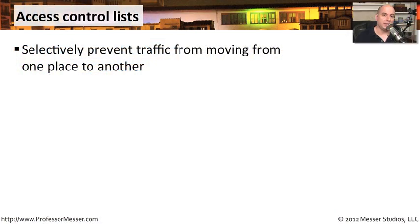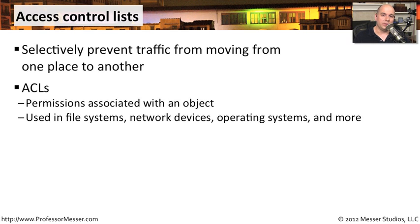An access control list is a mechanism that we might have in a file server, router, firewall, or any other type of infrastructure device that would restrict access from one place to another. We're going to make sure that traffic can't move from one part of the network or one part of a server to another. You'll see these referred to as ACLs. This means we are assigning permissions to a particular object and using them to restrict access in a single file system, maybe across the network or through a firewall, maybe inside of an operating system. There are many different ways to implement an ACL.